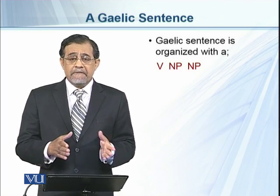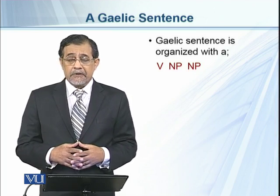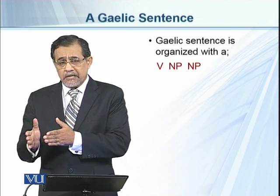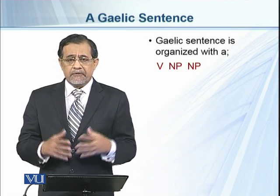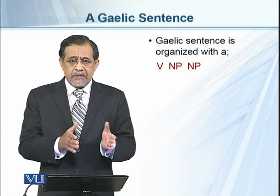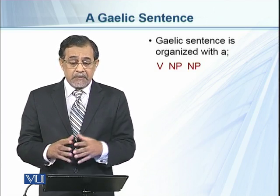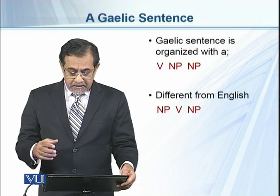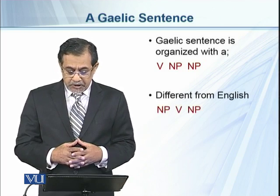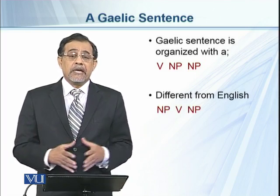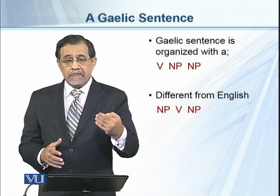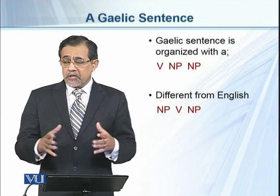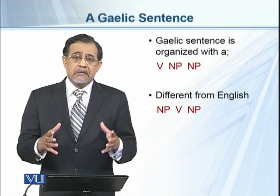The Gaelic sentence is organized as verb phrase, then noun phrase, then noun phrase. We can also say that in this language, the subject phrase comes later, after the verb phrase. As we have seen, even in English, the verb phrase consists of a verb and a noun phrase — the object of the sentence. So it's different from English structure, where we generally start with a noun phrase, then the verb phrase, then another noun phrase.